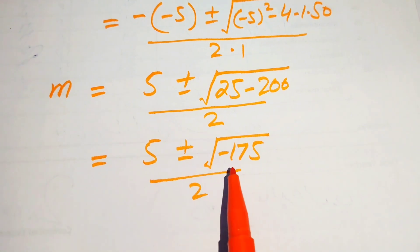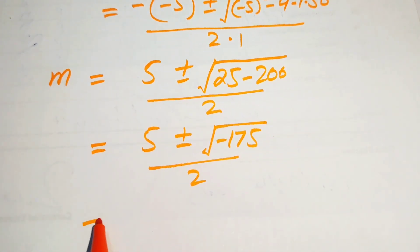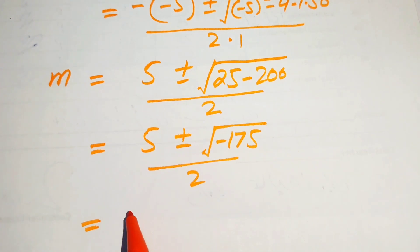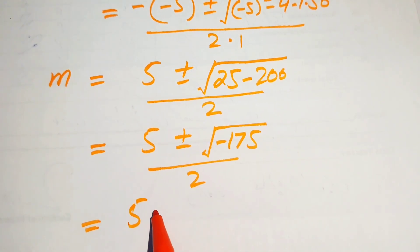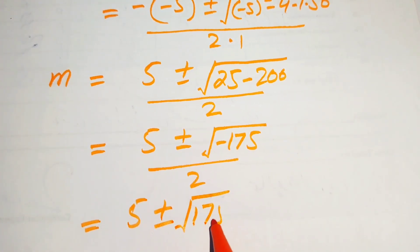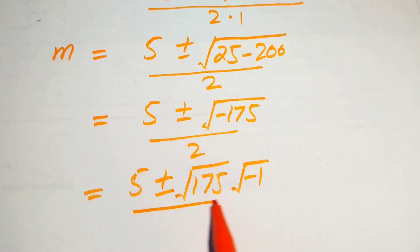Now we focus on the radical term and separate the square root of negative 175 into the square root of 175 times the square root of negative 1, giving us 5 plus or minus the square root of 175 times the square root of negative 1, divided by 2.